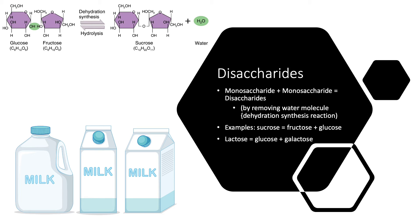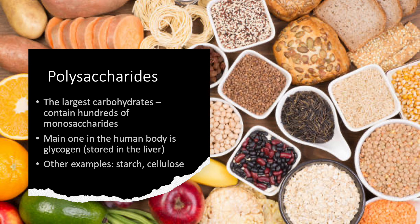Examples of disaccharides include sucrose — your typical table sugar that you put in coffee or tea — which when broken down yields fructose and glucose. Lactose, found in milk, is another disaccharide. Lactose is broken down by an enzyme called lactase into glucose and galactose. People who are lactose intolerant do not produce lactase, so they are unable to break down lactose, leading to discomfort, diarrhea, and upset stomach during digestion.